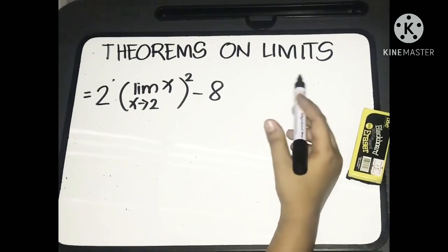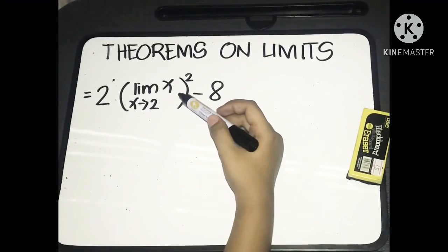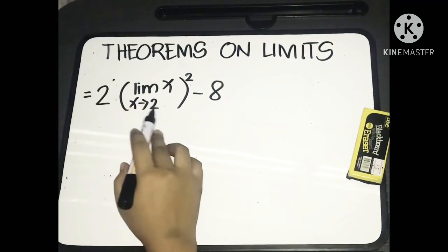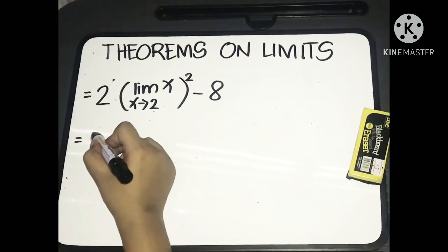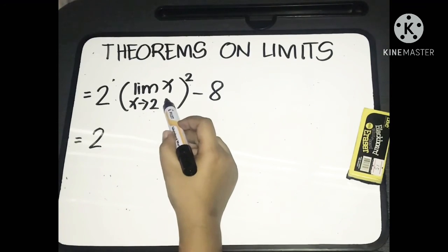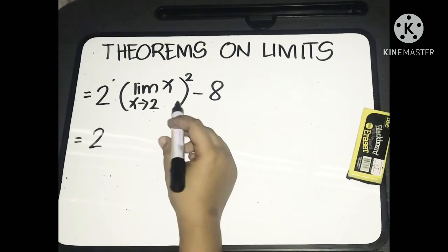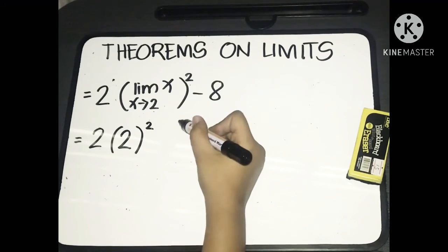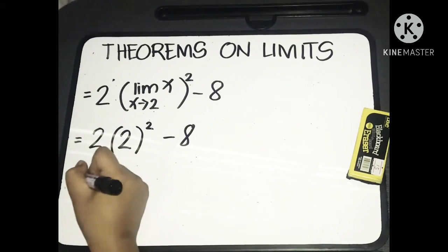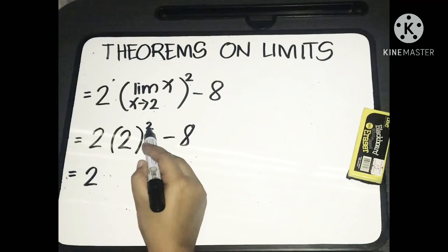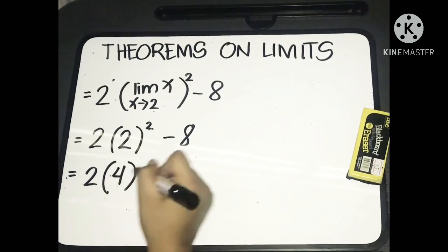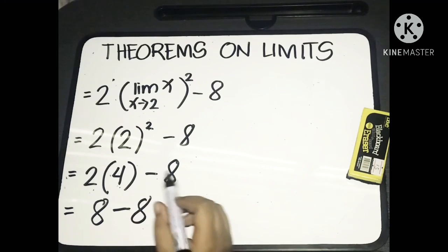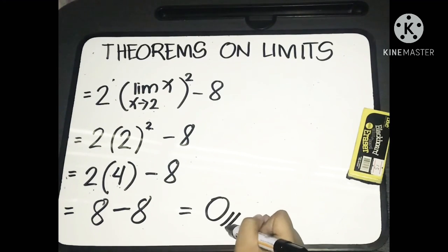Applying Theorem 8 to the x² term: the limit of x as x approaches 2, quantity raised to 2. The limit of x as x approaches 2 is 2 by direct substitution, so we have 2 raised to 2, which equals 4. So we have 2 times 4, minus 8. That gives us 2 times 4 equals 8, minus 8, which equals 0. That is the final answer.